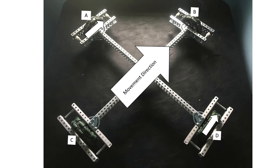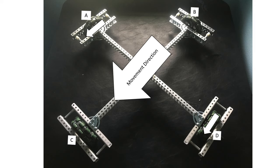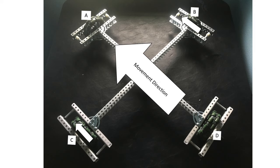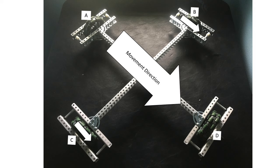If we want to move diagonally right forwards, we move wheels A and D in that direction. If we move them in reverse, we move diagonally left backwards. Moving wheels B and C forward, we move diagonally left forwards, and by reversing B and C we move diagonally right backwards.